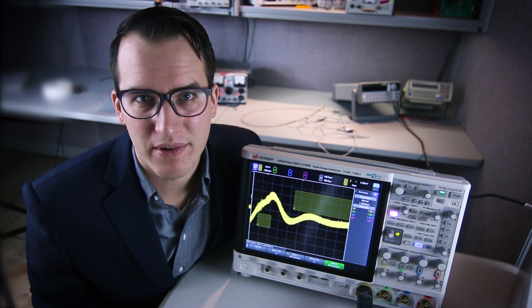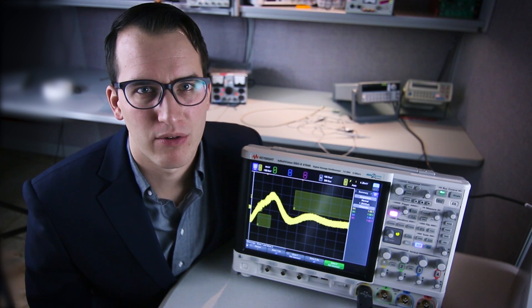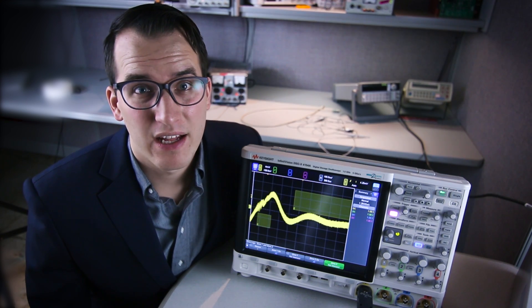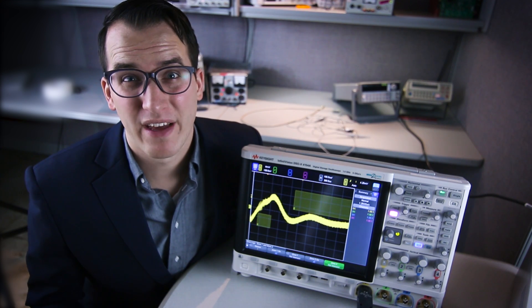Acquisition modes are essentially different methods that the scope can use to process the data coming in from the ADC. By default your oscilloscope is going to capture in normal acquisition mode, which means it's basically going to pick the best points from its ADC and display them on the screen. People normally just use normal acquisition mode, but there are a lot of other modes that can be helpful depending on the signal that you're probing.